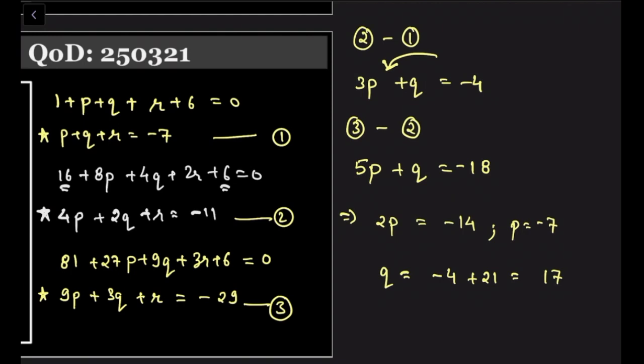Sure, okay. Substituting in any of the equations, I will get -7 + 17 + R = -7, so R = -17.